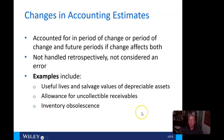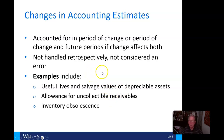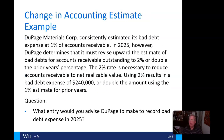Changes in accounting estimates are accounted for in the period of change, or the period of change and future periods if the change affects both. It's not handled retrospectively and is not considered an error. Examples include useful lives and salvage value calculations of depreciable assets, the allowance for uncollectible receivables, and inventory obsolescence. We're not going to go back retrospectively here.